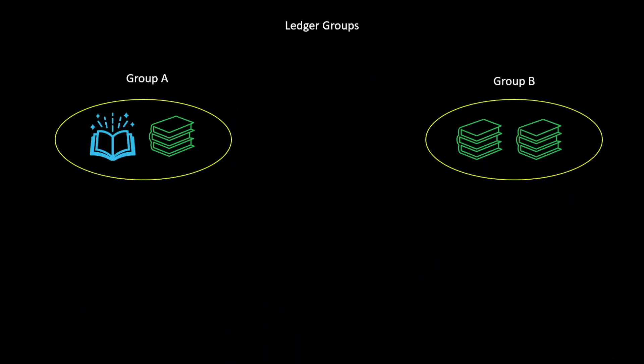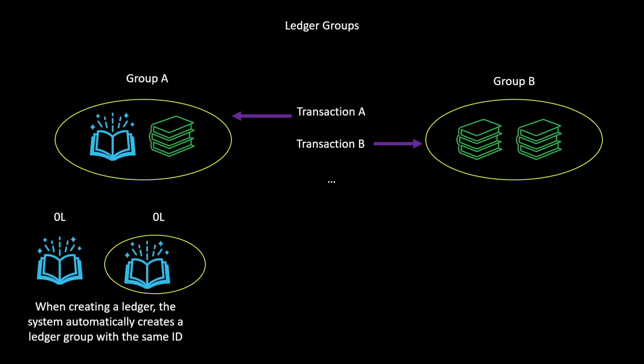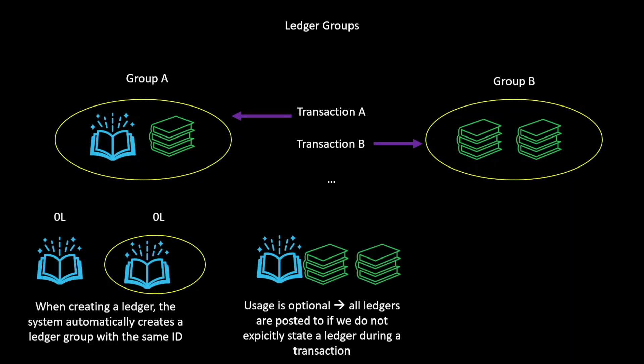Last but not least, there's the topic of so-called ledger groups. We can use ledger groups to summarize one or even several ledgers into a group to restrict the posting of financial data to that particular group. So for instance, transaction A is posted explicitly to ledger group A, while transaction B is explicitly posted to ledger group B, and so on. When creating a ledger, the SAP system automatically also creates a ledger group with the same ID. The usage of ledger groups is optional though. If we do not define a ledger group during the posting of a financial transaction, then this financial transaction is posted to all ledgers automatically.